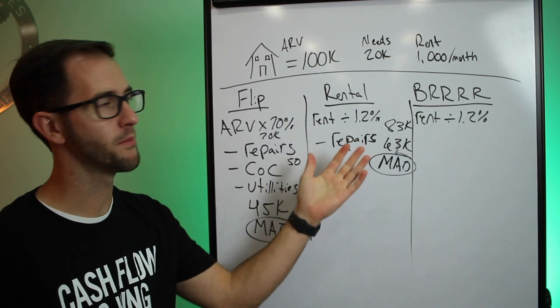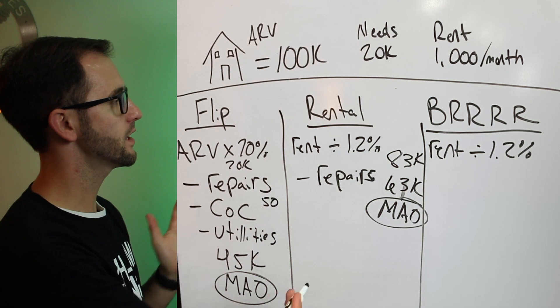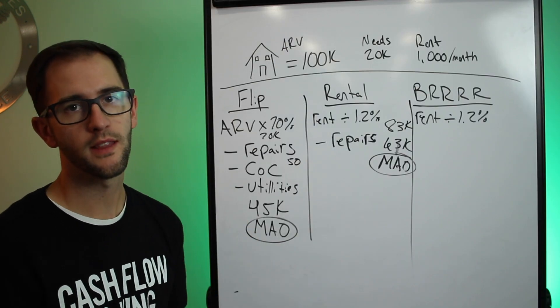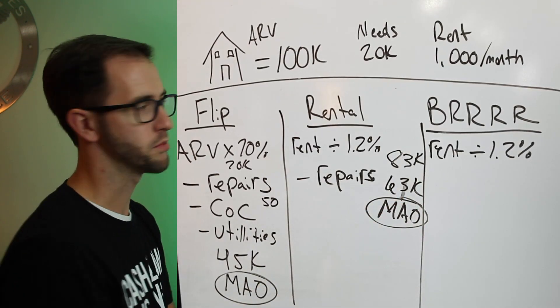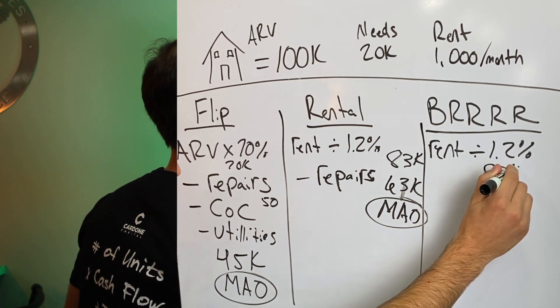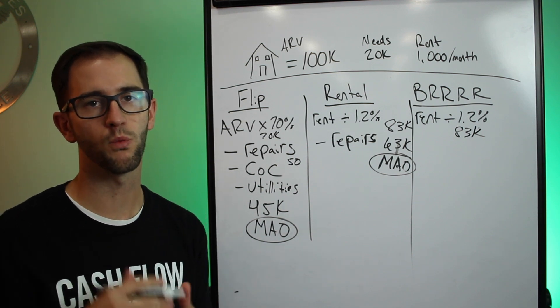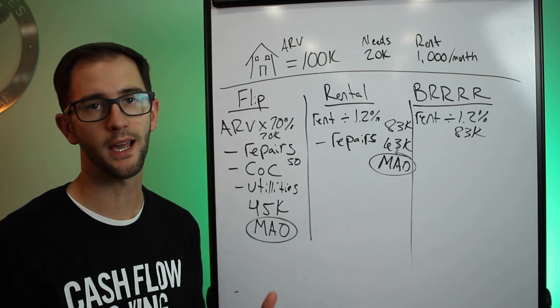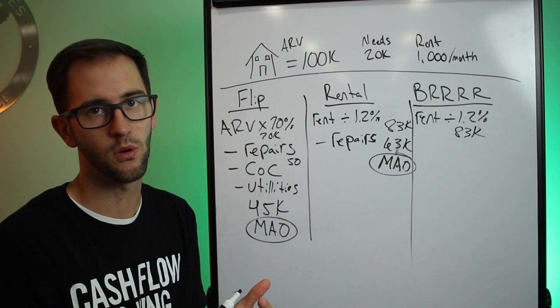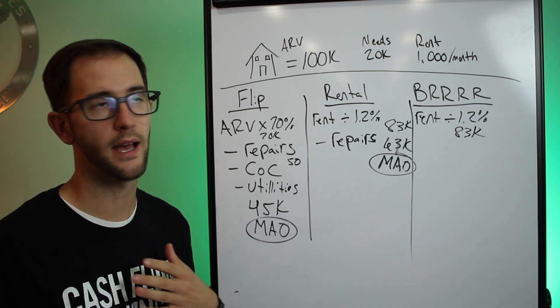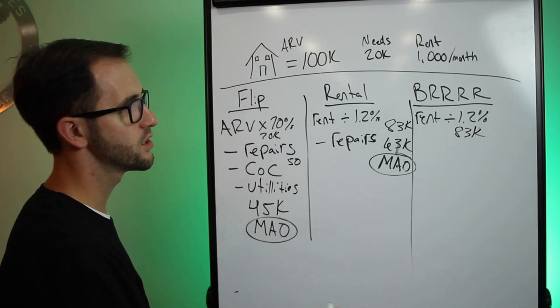All right. So now we're going to take a look at the BRRRR model. And as you can see, it starts out just like the rental model, but there is a lot of similarities between both of the two that we'll jump into now. So like we said before, we first start out looking rent times 1.2%. That gets us to $83K. All right. So now here's where it gets a little bit different. So since we have to plan for the refinance and making sure that we're able to get our money back out, now's where we have to consider what the max amount we can be into this deal for is.